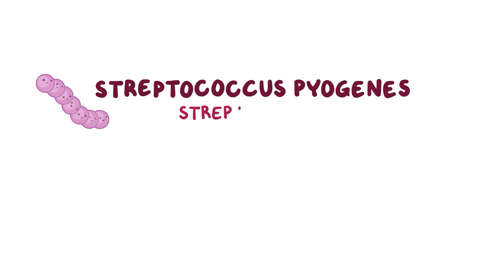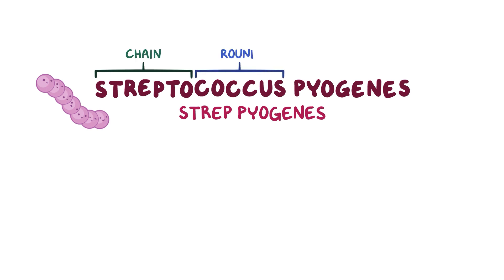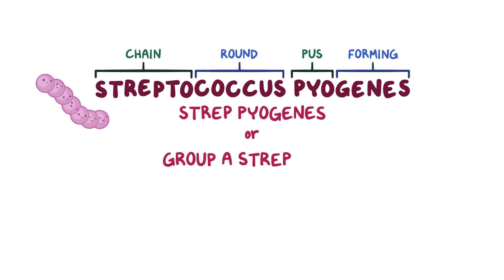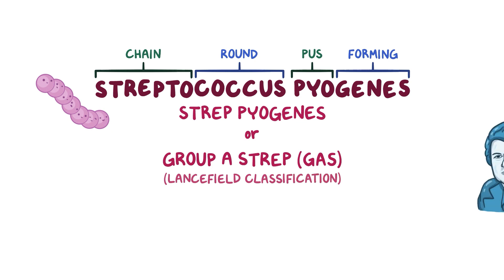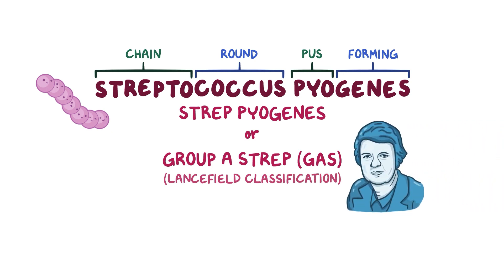Streptococcus pyogenes, sometimes called strep pyogenes, can be broken down into 'strepto' meaning chain, 'coccus' referring to round shape, 'pyo' meaning pus, and 'genes' meaning forming. So strep pyogenes are round bacteria that grow in chains and are responsible for a number of infections that often present with pus. Strep pyogenes are also called group A strep, or GAS, in Lancefield's classification, developed by American microbiologist Rebecca Lancefield.